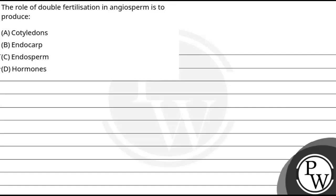Let's read the question. This question asks about the role of double fertilization in angiosperms — what does it produce? The options given are: A) cotyledons, B) endocarp, C) endosperm, and D) hormones.